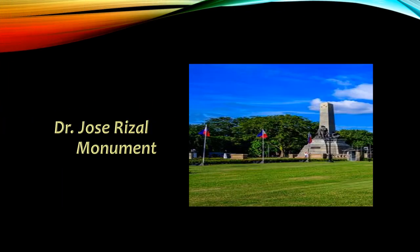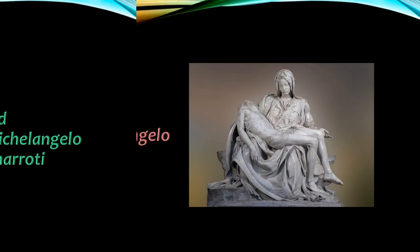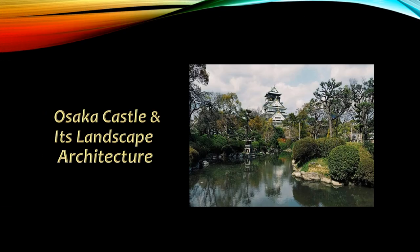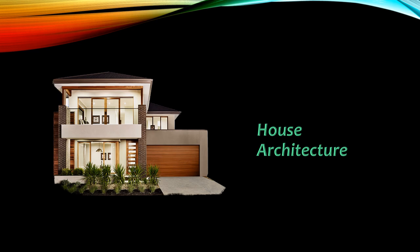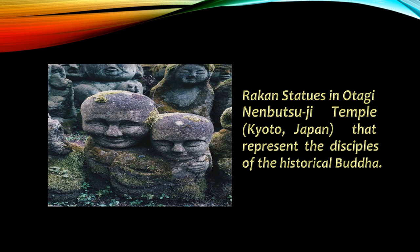Here are examples: the Zerizal Monument, David of Michelangelo Bonarotti, Pieta of Michelangelo Bonarotti, landscape monument architecture, Osaka Castle in its landscape architecture, house architecture, clay figures, and Rican statues in Otagi Nenputsuji Temple in Kyoto, Japan, that represent the disciples of the historical Buddha.